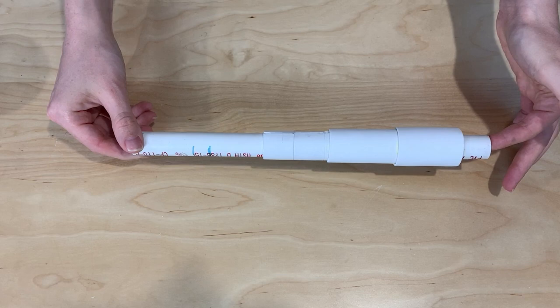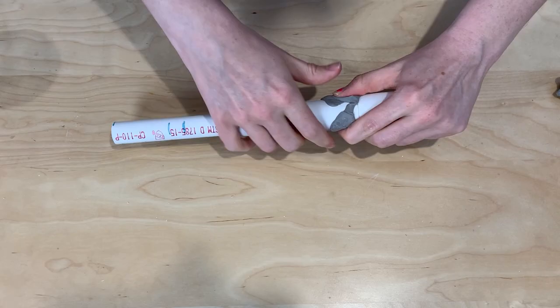Alright, let's get crackin'! The base of the whip is a 10 inch section of half inch PVC pipe. To start with, I marked off the various sections of the whip design along the PVC pipe.